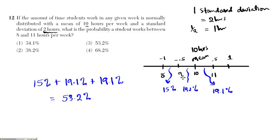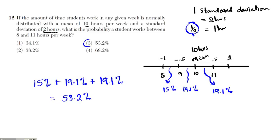Note: in this problem, every hour is not a standard deviation — every hour is actually half of a standard deviation, so you have to be careful. We're going one standard deviation to the left and half a standard deviation to the right. The answer is option 3.